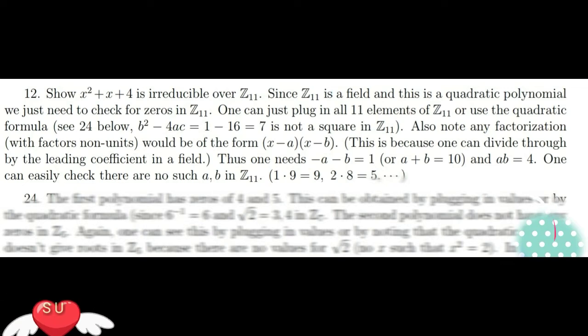Also, factorization would be of the form (x minus a)(x minus b). Once we need minus a minus b equal 1, so a plus b, and then ab equal 4.